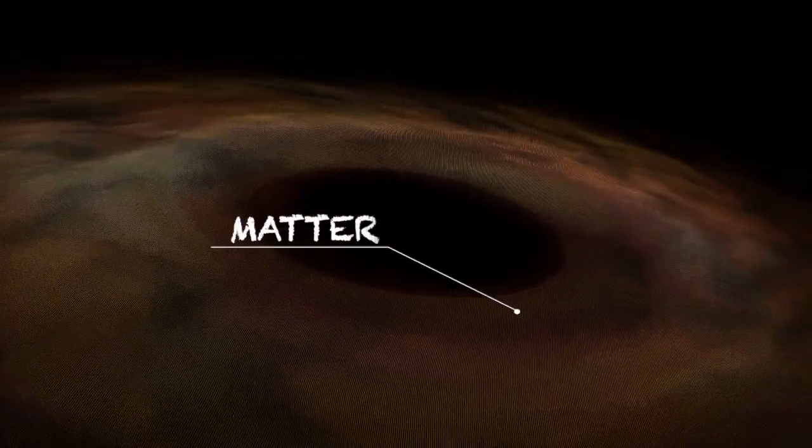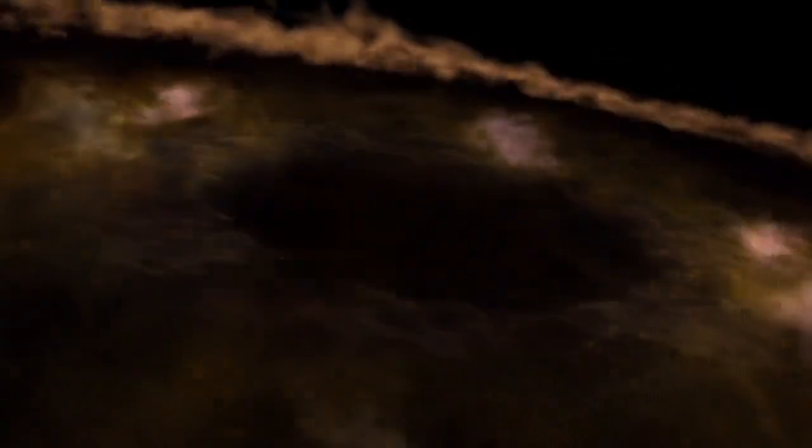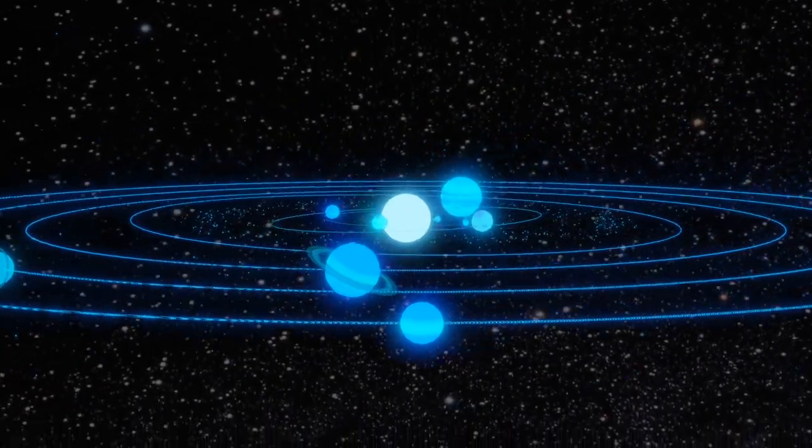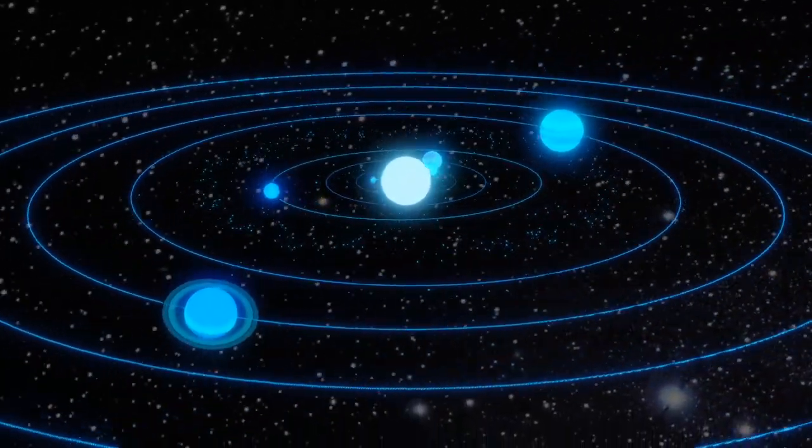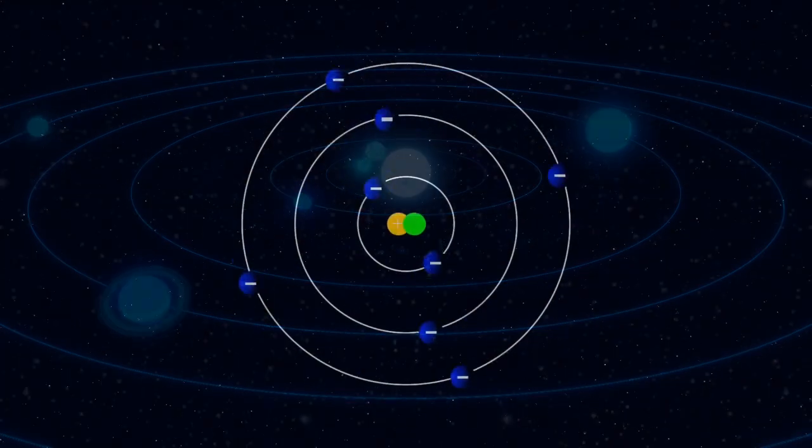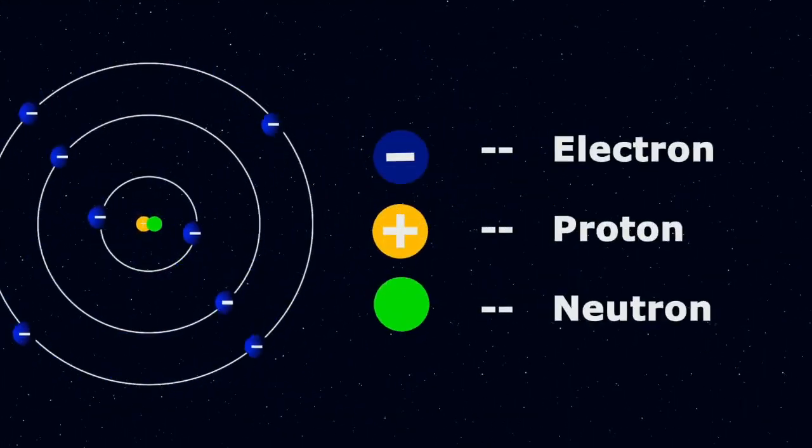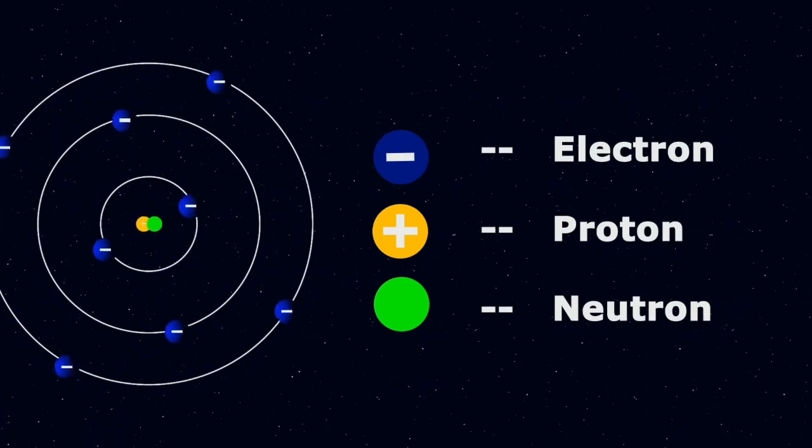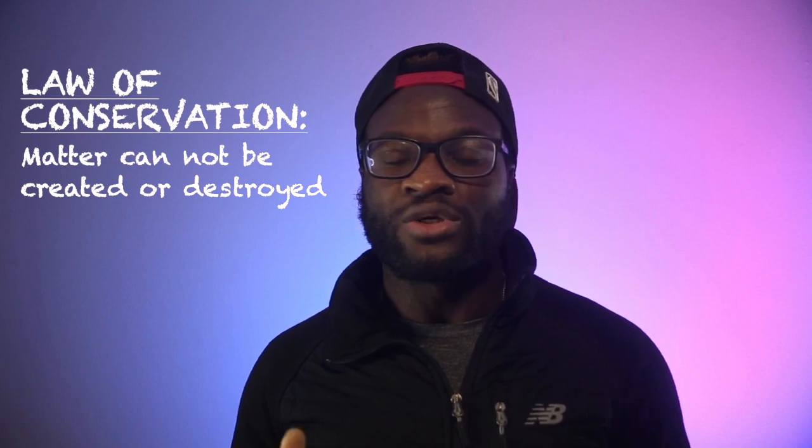What is matter? Matter is defined as whatever occupies space and has mass. Everything, including yourself, is made of matter. It's the foundation or building blocks of everything in existence. All matter is made of atoms, which are in turn made up of protons, neutrons, and electrons. According to the law of conservation, matter cannot be created or destroyed.